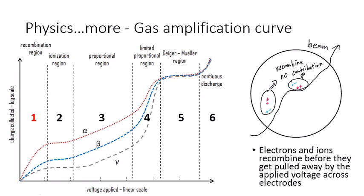These electrons and ions will either move freely or they will quickly recombine into neutral status before they get pulled away by the applied voltage.